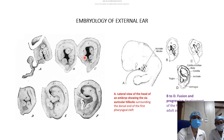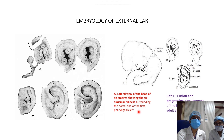Now, particularly about the development of the pinna: the pinna develops from six swellings or hillocks, known as the hillocks of His, surrounding the dorsal end of the first pharyngeal cleft. These start developing from the fourth week of gestation, slowly fuse with each other, and ultimately form the adult configuration of the pinna. This is completed by eight weeks of gestation.